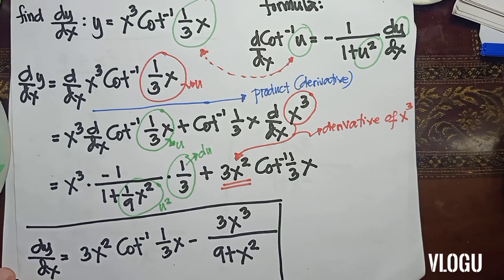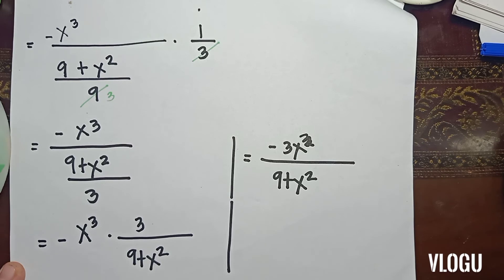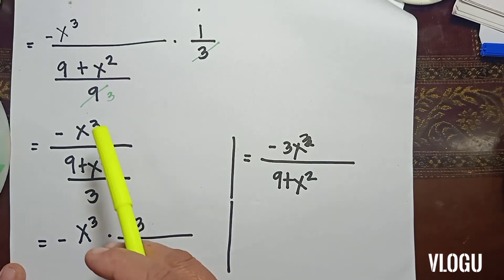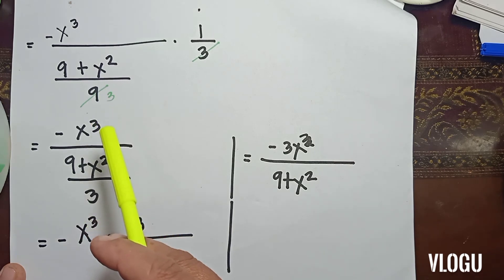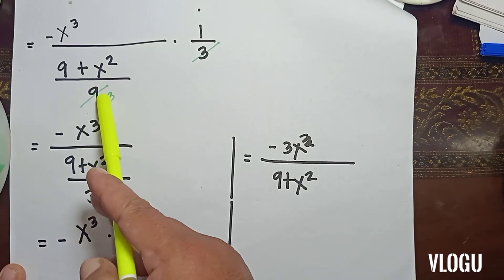Let me show how I arrived at negative 3x cubed over (9 plus x squared). The common denominator is 9, and simplifying gives us that term.